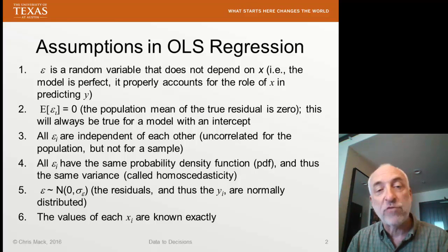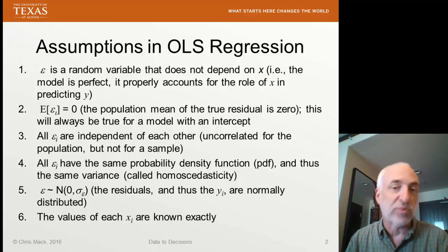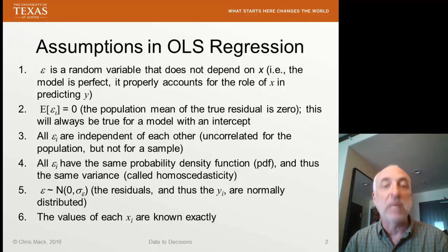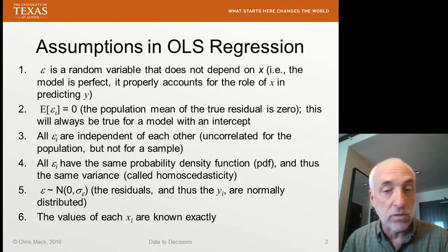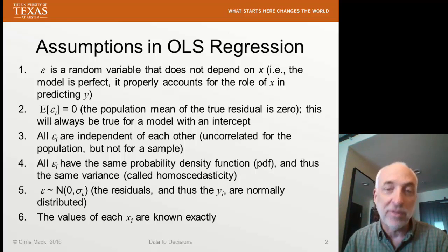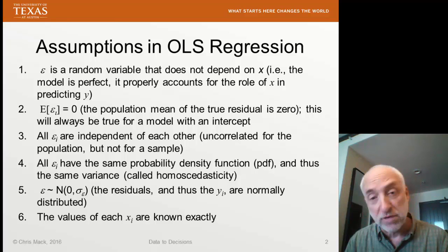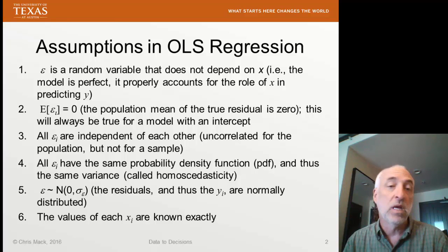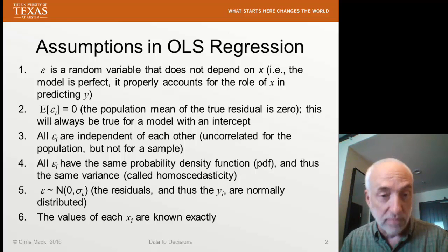Number four: assume that every residual has the same PDF — the same probability density function. It's described by the same distribution of errors or uncertainties involved in measuring the Y values. We call this homoscedasticity. Homo means 'the same' and scedasticity means 'spread or distribution,' so it's the same spread or distribution for every single data point. If this assumption is violated, we say we have heteroscedasticity.